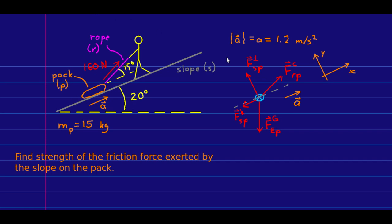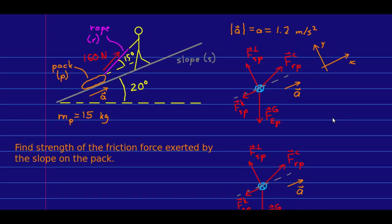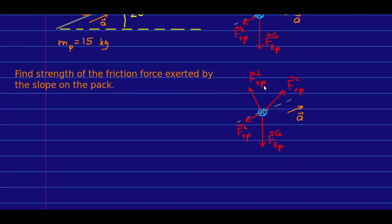Before working further, I'm going to simplify my notation. These force symbols with all the subscripts are really good when you're figuring out what forces exist and checking whether you've correctly identified them. But in a case like this with a single object, there's a single gravitational force, a single perpendicular force, and a single friction, so the notation is unnecessarily cumbersome. If I had multiple objects, I'd keep this notation, but I don't. I only have one gravitational force, one perpendicular force, one kinetic friction. And for the rope force, I could call it Fc for contact force, but instead, because it's a tension in a rope, I'll call it T.